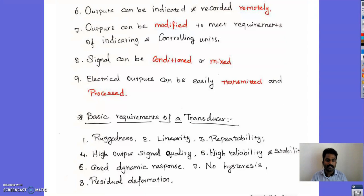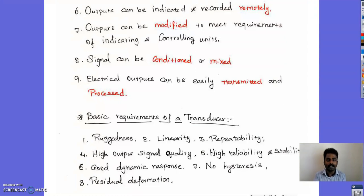The system should be reliable as well as stable during operation. It should have a good dynamic response — meaning the changing input value should be managed and processed. There should be no hysteresis effect in the transducer, no formation of heat, and no residual deformation when applying load to the transducer. These are some of the basic requirements of the transducer.